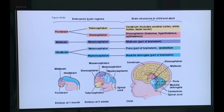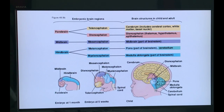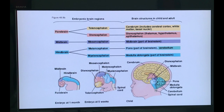There is a median region called the diencephalon, which mainly gives rise to the optic cup. As I showed in my previous video, there will be two outgrowths which will later form the optic vesicles. The diencephalon also gives rise to the thalamus, hypothalamus, and epithalamus, and contributes to the development of the pituitary gland.